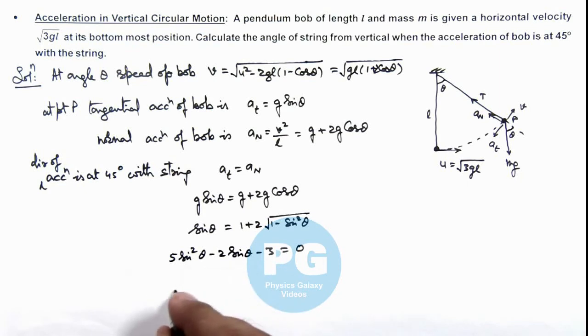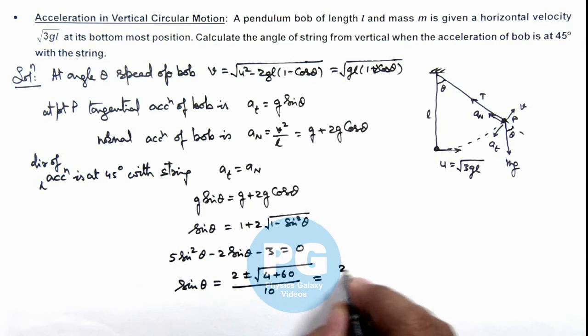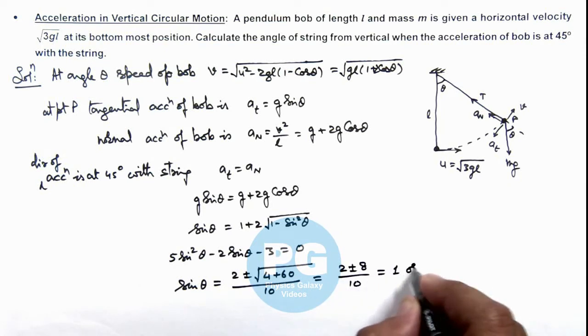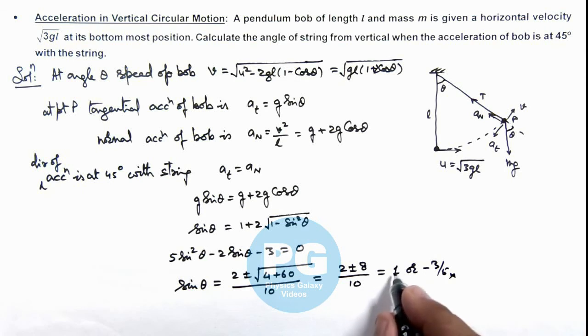On solving this, I am getting sin θ = [-b ± √(b² - 4ac)]/(2a), which is 2 ± √(4 + 60) divided by 10. So here we are getting it as (2 ± 8)/10. So this value will be either 1 or -3/5, which can be discarded. At sin θ = 1, we can directly write the value of θ to be 90 degrees. That will be the answer for this problem.